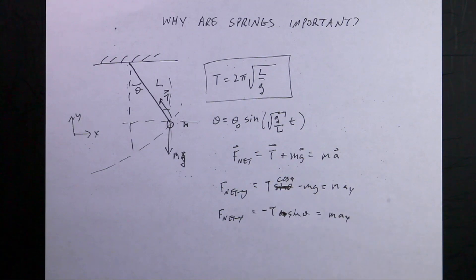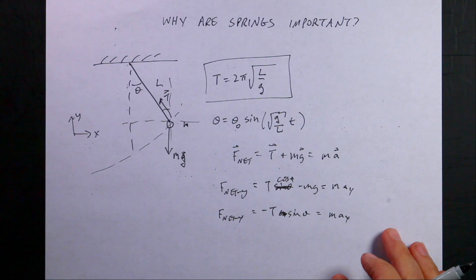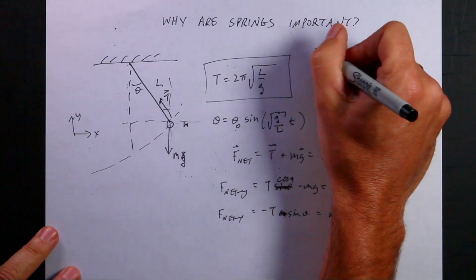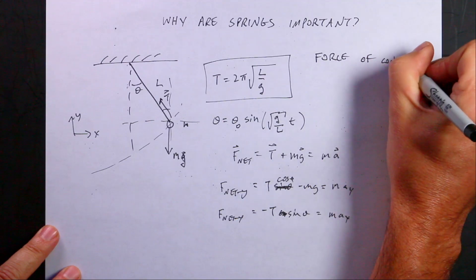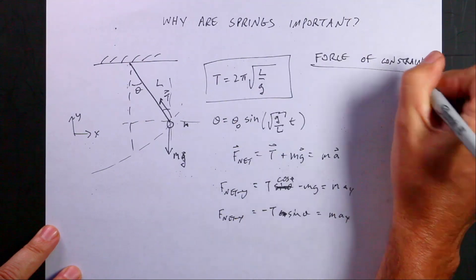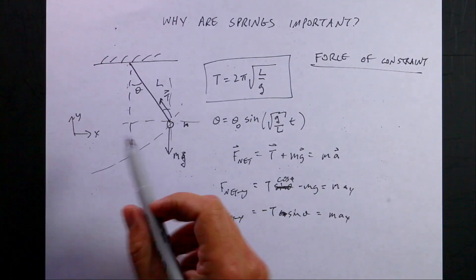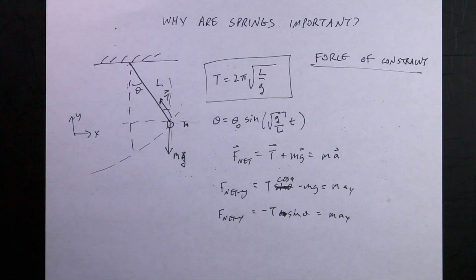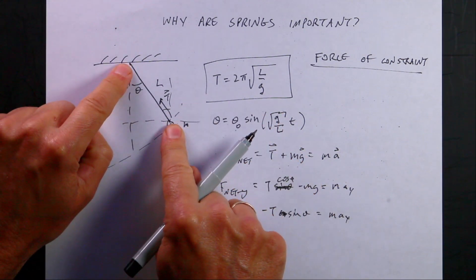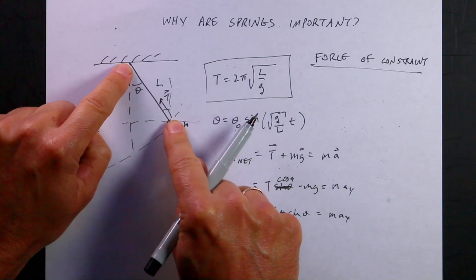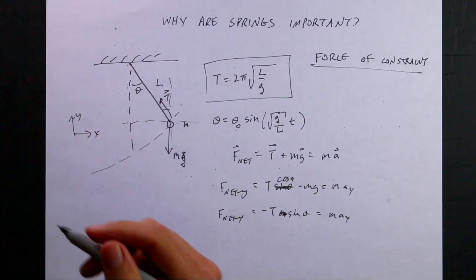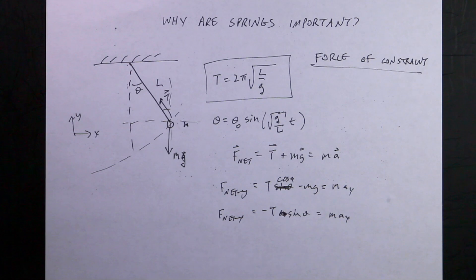Here I don't know the tension, I know g, but I don't know a_x or a_y. You can't really solve this problem with normal Newtonian mechanics. Tension is a difficult force to deal with — tension is actually a force of constraint. That means the tension will apply whatever force it needs to prevent the mass from moving farther than distance L from the pivot. It won't push, but it will prevent the string from stretching.